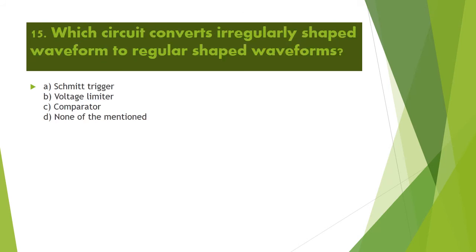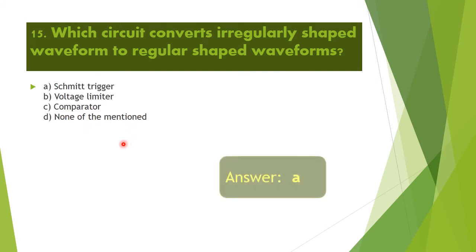Next question: Which circuit converts an irregularly shaped waveform to a regular shaped waveform? Option A: Schmitt trigger. Option B: voltage limiter. Option C: comparator. Option D: none of the above. The correct answer is Option A — Schmitt trigger, which converts irregularly shaped waveforms into regular shaped waveforms.